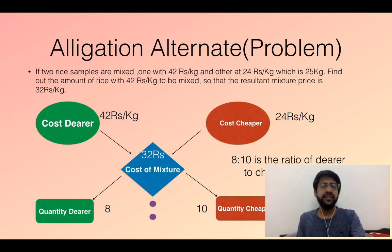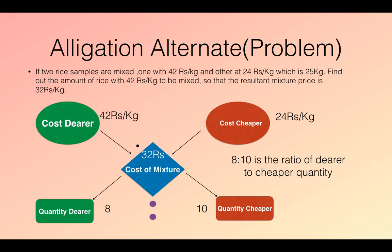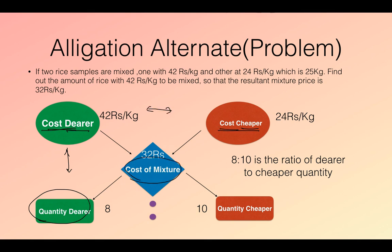In the allegation alternate method, we have two products: a dearer (costlier) product and a cheaper product. On the left-hand side we write the cost of the dearer product, and below it the unknown quantity. On the right-hand side we write the cost of the cheaper product and its quantity. In the middle we write the cost of the mixture. We want to find the ratio of the quantity of the dearer product to the quantity of the cheaper product.